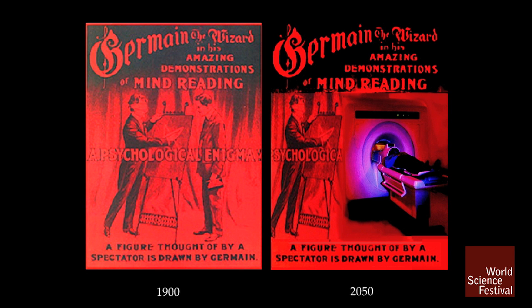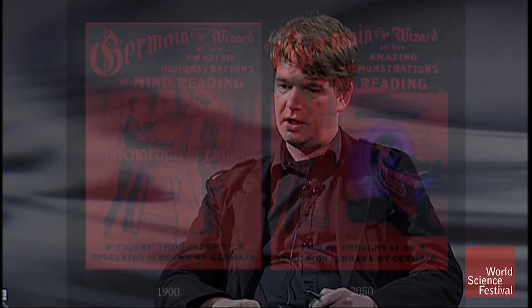What you can see here on the left is the mind reading of the 1900s. In those days, people were fascinated by stage tricks and stage magic. In a typical stage demonstration, a person comes out of the audience, comes up on the stage, and the performer with their supposed mind reading abilities draws a figure that this person is thinking of. On the right, you can see our current version — a brain scanner that could now possibly read out what a person is thinking, even if they don't tell us, by deciphering their brain activity.